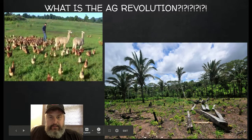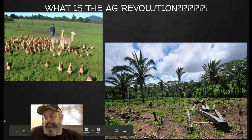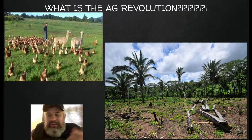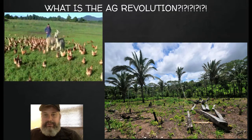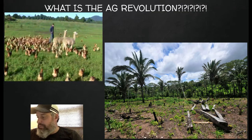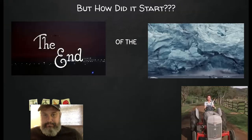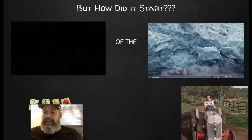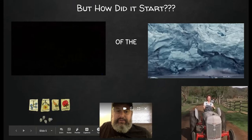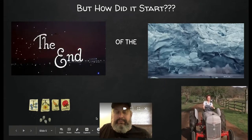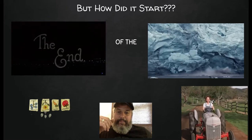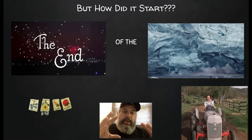How are they going to figure out how to do that? Well, the end of the ice age has to happen first. You're not going to get the agricultural revolution without the end of the ice age.